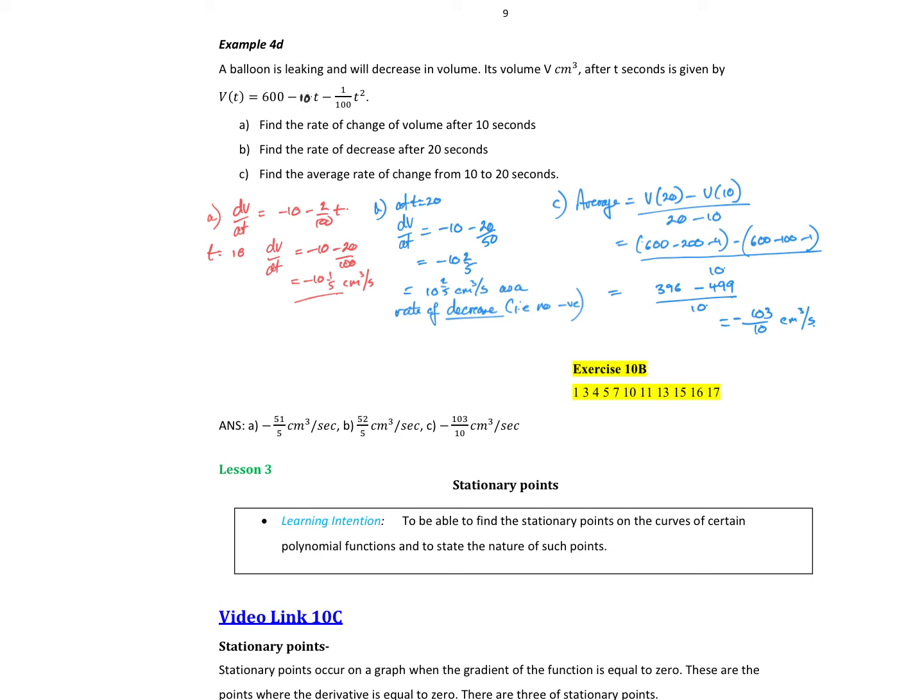So now we've got a balloon leaking and it's decreasing in volume. Its volume is given up to t seconds by V at t equal to 600 minus 10t, not 1 on 10t. So there's a little change there. Minus 1 on 100t squared. So we want to find the rate of change at the volume after 10 seconds. So after 10 seconds or at the 10 second mark, that's my instantaneous rate of change. So I'm going to need dv dt, which in this case is negative 10 minus 2t on 100. Obviously, the point I'm interested in is at t equal to 10. So I put that t equal to 10 into there, we get negative 10 minus 20 over 100, which is a negative 10 and one-fifth centimeters cubed per second.